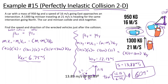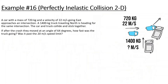Let's try another one. A car with a mass of 720 kilograms and a velocity of 22 meters per second approaches an intersection. A 1400 kilogram truck traveling north is headed for the same intersection. The car and truck collide and stick together. After they crash, they move at an angle of 64 degrees — how fast was the truck going? Was it past the 20 meters per second speed limit?